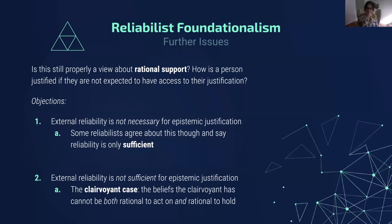Here are further issues for specifically a reliabilist kind of foundationalism, having to do with this second response to the problem of likelihood. Is this still properly a view about rational support? If you think perception just gives you support in virtue of the connection that you have with the world, but not in virtue of the content that perception provides to you — the assertoric declaration 'this is a computer in front of me' — then how is it still properly a view about rational support? How is a person justified if they're not expected to have access to their justification?